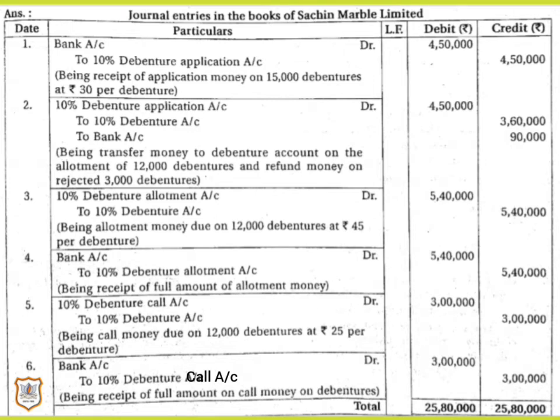Our first entry would be: Bank Account debit, to 10% Debenture Application Account. Bank account will be debited with the application money received — that is 15,000 debentures multiplied by rupees 30, which comes to rupees 4,50,000.